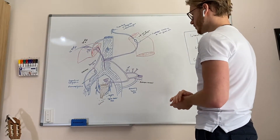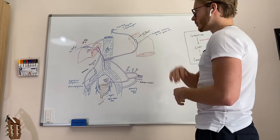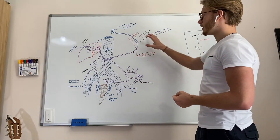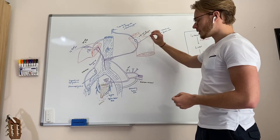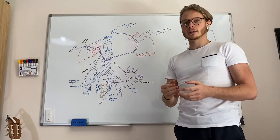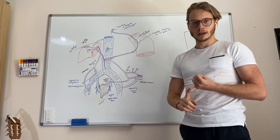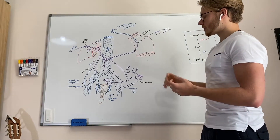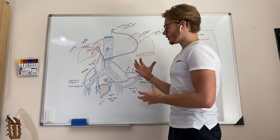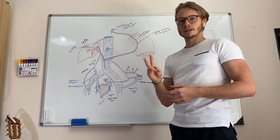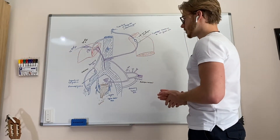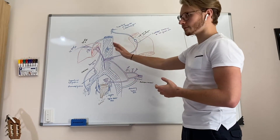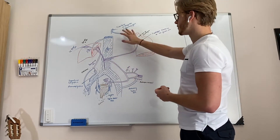So first we're going to start with the portocaval anastomosis. Before I explain the anastomosis, I want to tell you something about the general idea of the caval system and the portal system, because they are the two systems in the scheme I drew for you.